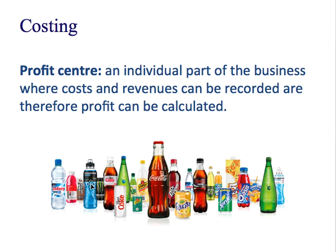Here is the product portfolio of some of the Coca-Cola company's products. Imagine they wanted to treat all of these products as different profit centres. One of the reasons they might do this is because they want to compare performance and say, is Dr Pepper more successful than Fanta, or the other way around? But to be able to do this, because in reality they're actually made by one business, you would have to be able to allocate all the costs.